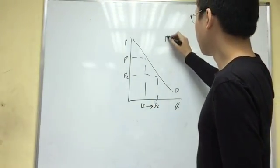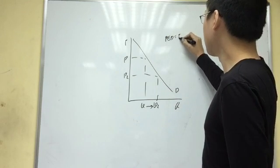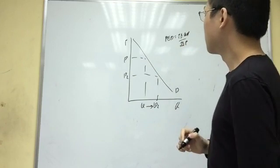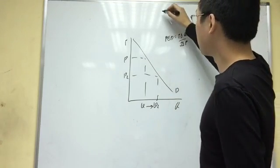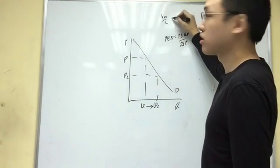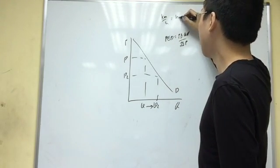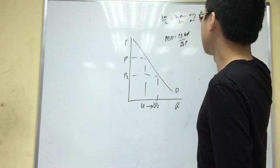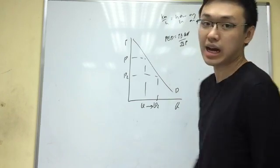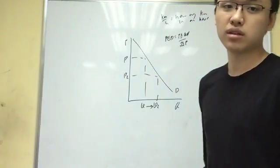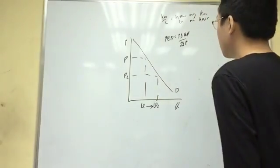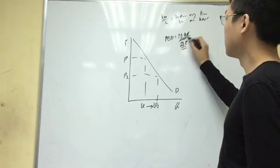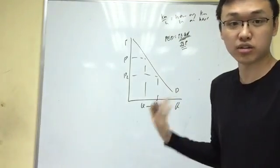The PED is actually the percentage change in QD over percentage change in price. So one way you can interpret it, for example, what does kilometers per hour mean? Kilometers over hour is basically how many kilometers in an hour. Kilometers per hour tells you how many kilometers you travel in one hour. So PED is basically for every percent change in price, how many percentage change in quantity demand do you get?